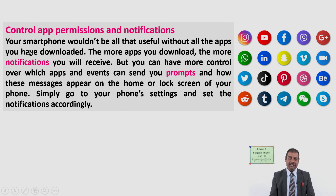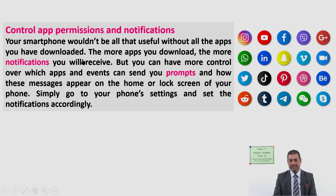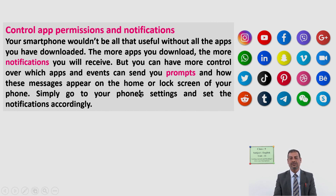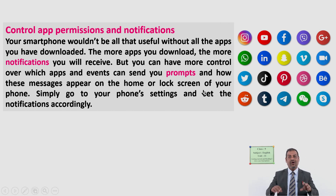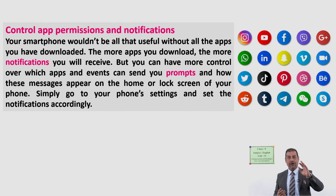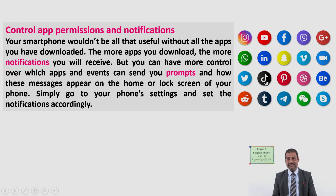Your smartphone would not be all that useful without all the apps you have downloaded. The more apps you download, the more notifications you will receive. But you can have more control over which apps and events can send you prompts and how these messages appear on the home or lock screen of your phone. Simply go to your phone settings and set the notifications accordingly.